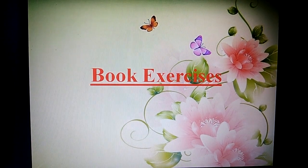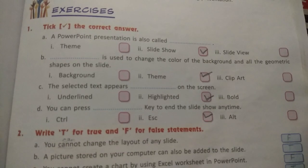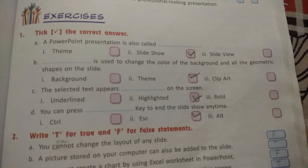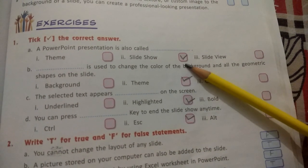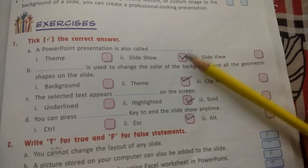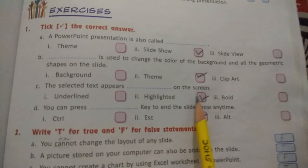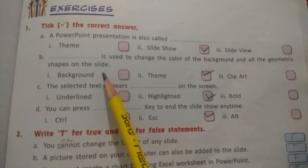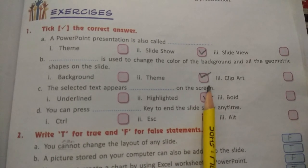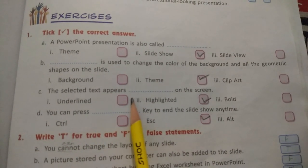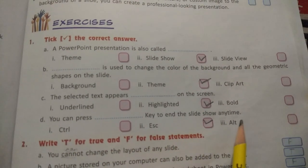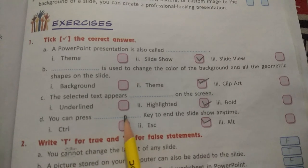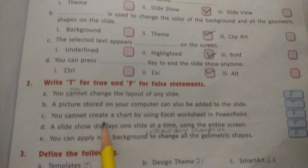Please take out page number 71. Exercise number one: tick the correct answer. A PowerPoint presentation is also called - tick slideshow and write down in fill-up. Dash is used to change the color of the background and all the geometric shapes on the slide - tick theme and write down in fill-up. The selected text appears dash on the screen - tick highlighted and write down in fill-up. You can press dash key to end the slideshow on time - tick Escape and write down in fill-up. Now Exercise number two.